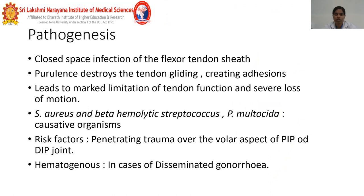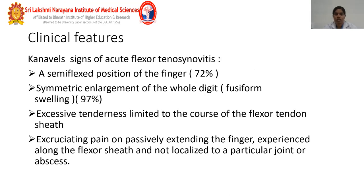Pathogenesis: the closed-space infection of the flexor tendon sheath causes purulence that destroys tendon gliding, creating adhesions and limiting tendon function and range of motion. Staphylococcus aureus and beta-hemolytic Streptococcus are the most common causative organisms. Risk factors include penetrating trauma involving the proximal or distal interphalangeal joint, and hematogenous spread in cases of disseminated gonorrhea. Clinical features — Kanavel's signs of acute flexor tenosynovitis — are: semiflexed position of the finger, fusiform swelling of the entire digit, excessive tenderness along the course of the flexor tendon sheath, and excruciating pain on passive extension of the finger along the flexor sheath, not localized to a particular joint.